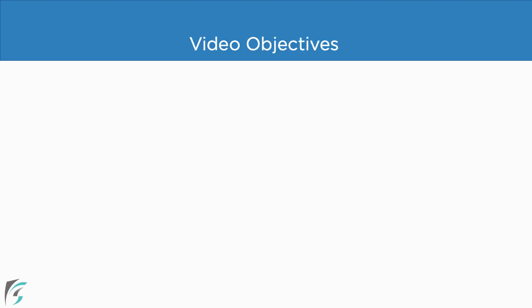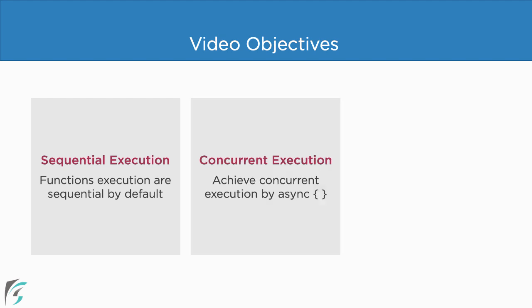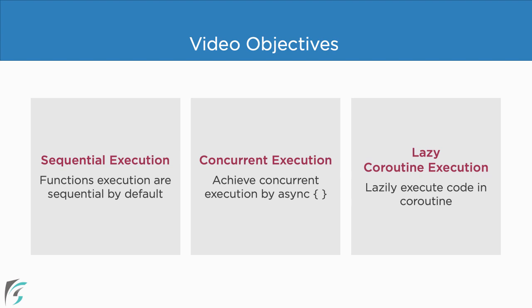Let us now see what we are going to cover in this video. We will first see how function execution within a coroutine is sequential by default. Then we will find a workaround to make them concurrent — that is, execute those functions in parallel instead of sequentially. Finally, we will explore how to execute a block of code lazily using a coroutine. If the term 'lazy' is new to you, don't worry — it is something from the Kotlin programming language and you will understand when we see its demo.